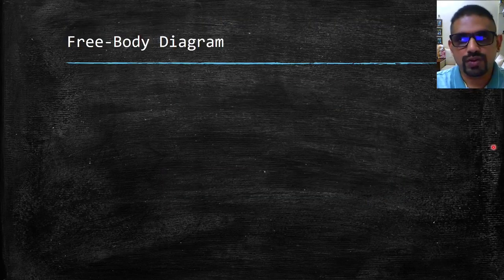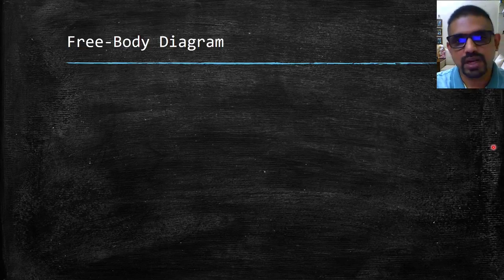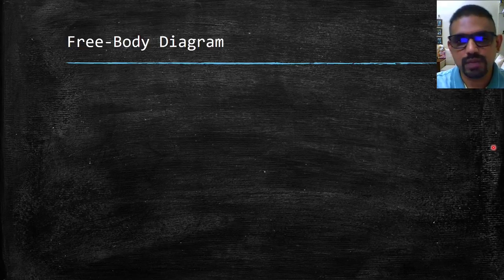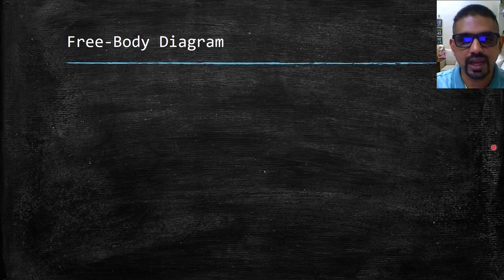In solving a problem concerning the equilibrium of a rigid body, it is essential to consider all the forces acting on the body. It is equally important to exclude any forces which are not directly applied on the body.